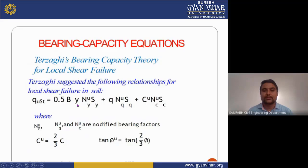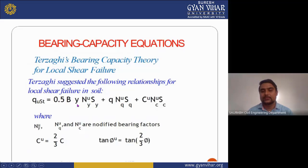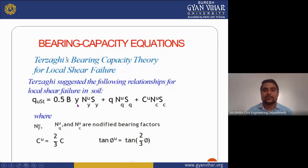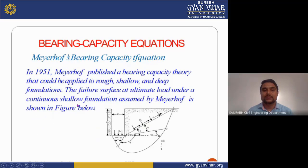For Terzaghi's bearing capacity theory for local shear failure, the relationship is: Q-ust = 0.5 × B × gamma × N-u-gamma × S-gamma + Q × N-u-Q × S-Q + C-u × N-u-C, where N-u-gamma, N-u-Q, and N-u-C are modified bearing capacity factors, and C-u is represented by two-thirds of capital C.